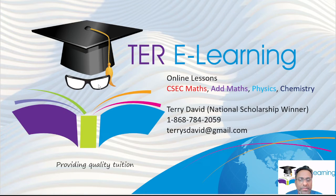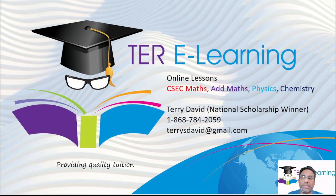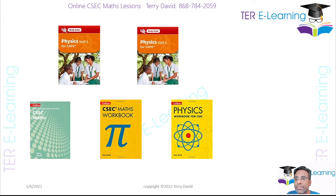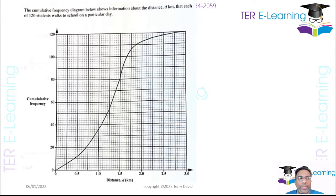Hi guys, Terry here again. I'm going to be working question 5 in a January 2022 paper. If you have not done so already, please subscribe to my YouTube channel and also hit like. So we're moving on to question 5. In question 5, they give us a cumulative frequency diagram showing information about the distance each of 120 students walk to school on a particular day. They give us a graph.